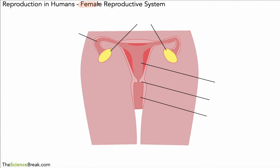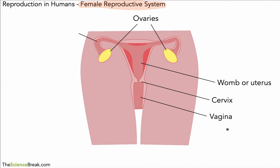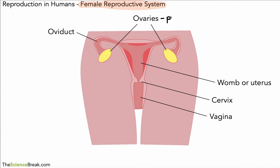Now let's look at the female reproductive system. Here we have a diagram, and again a few key labels to know and remember. The two in yellow are the ovaries. We then have this part here — called either the womb or the uterus, either name is fine. We have the cervix, the vagina, and over on the left is a tube called the oviduct.